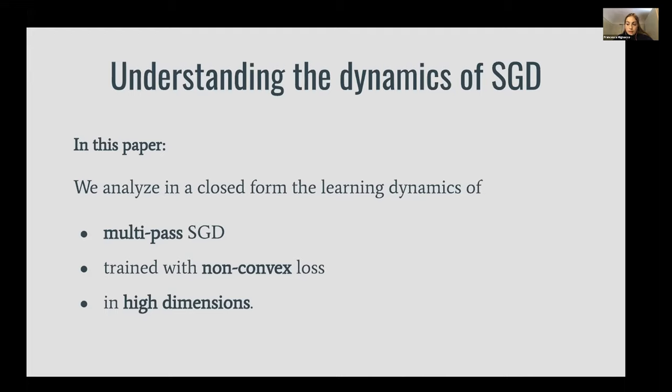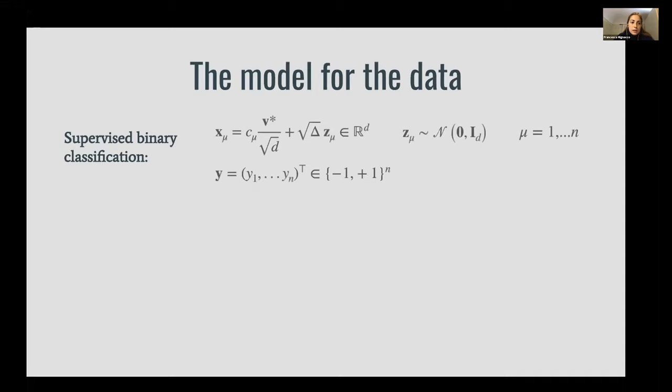We consider a problem of supervised binary classification where the input data are N vectors in dimension D, and we model the data as generated from a mixture of Gaussians where the centers of the Gaussian clusters are defined by this vector v star and the coefficients c_mu.